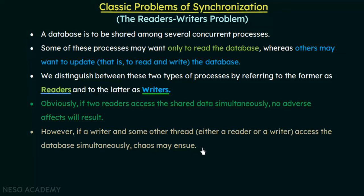However, if a writer and some other thread — either a reader or a writer — access the database simultaneously, chaos may ensue. When a writer accesses the database it is going to make some modification, so if a reader is reading at the same time, it won't read the exact data. Similarly, if two writers simultaneously try to make changes to the same data, that will also result in chaos.